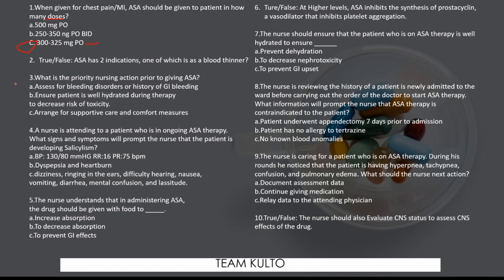Number three: What is the priority nursing action prior to giving aspirin? The answer is assessment — remember, aspirin is a blood thinner and puts the patient at high risk for bleeding. Number four: A nurse attending to a patient on ongoing aspirin therapy — what signs and symptoms indicate the patient is developing salicylism? The answer involves CNS status changes. Number five: The drug should be given with food — the rationale is to prevent GI effects, since aspirin can be irritating to the GI tract.